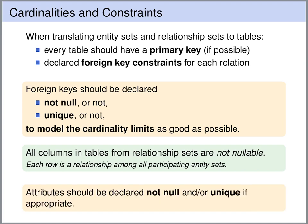Beyond the foreign keys we also need to consider the attributes. For the attributes of the relationship sets and the entity sets we have to think about whether they can be declared as NOT NULL or UNIQUE. We should declare attributes as NOT NULL if we do not want the user to leave cells empty. We should declare them as UNIQUE if we are sure that this attribute uniquely identifies the entity. We can have situations where we have primary keys that uniquely identify the entity, but we also have other secondary keys that identify the entity as well, and declaring them as UNIQUE helps to prevent input errors.